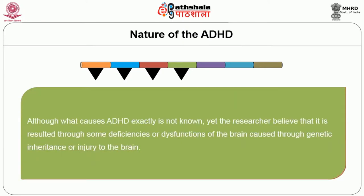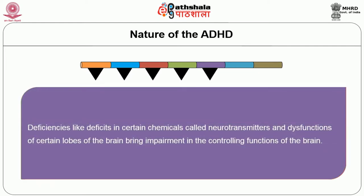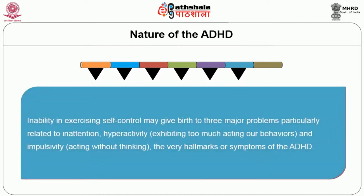Although what causes ADHD is not yet known, researchers believe it results from deficiencies or dysfunctions of the brain caused through genetic inheritance or brain injury. Deficits in certain chemicals called neurotransmitters and dysfunctions of certain lobes of the brain bring impairment in the brain's controlling functions. Inability in exercising self-control gives birth to three major problems related to inattention, hyperactivity and impulsivity — the very hallmarks and symptoms of ADHD.